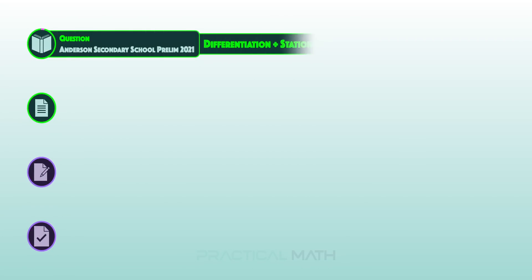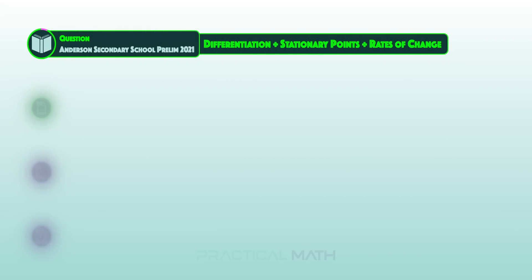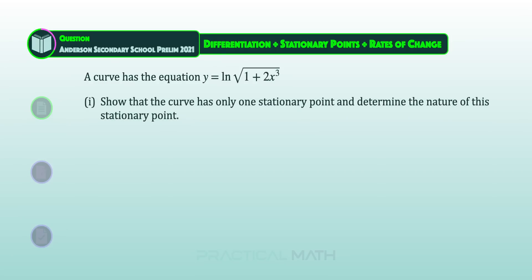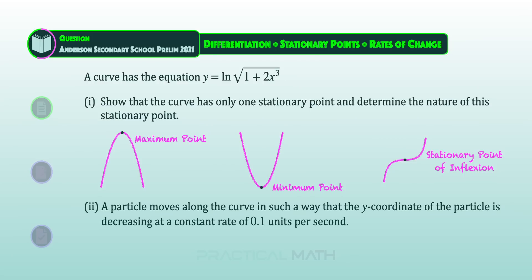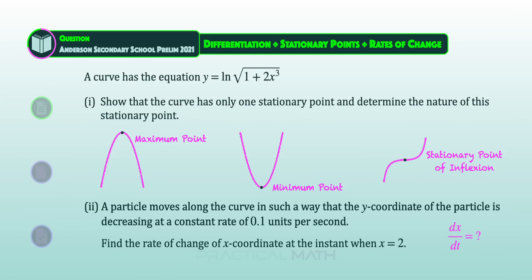Hey, this is Dexter. This video is about the applications of differentiation involving stationary points and rates of change. The question begins with a curve of an equation of y equals ln of the square root of 1 plus 2x cubed. In Part 1, show that there is only one stationary point and determine its nature — whether it is a maximum, a minimum, or a stationary point of inflection. In Part 2, given that the y-coordinate of a particle moving along this curve is decreasing at a constant rate of 0.1 units per second, find dx/dt when x equals 2.